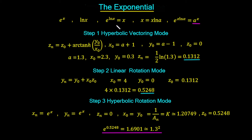If we take the function e and raise it to the power of its inverse, which is ln x, we just get back to the value of x. So what we can do is raise e to the power of x·ln a. That means e to the x·ln a is the same as a to the x.